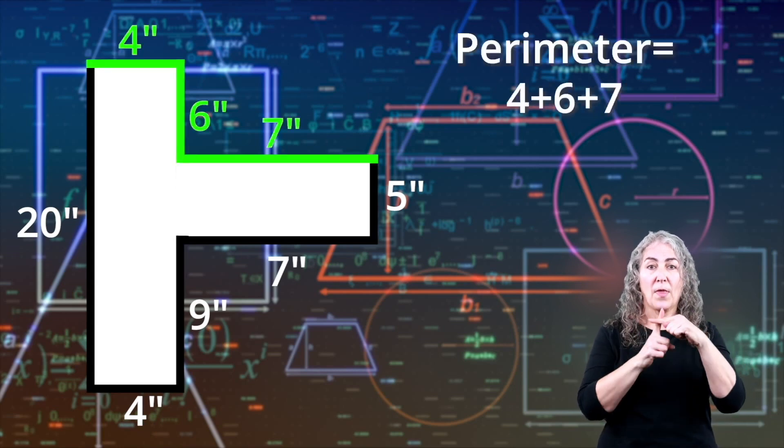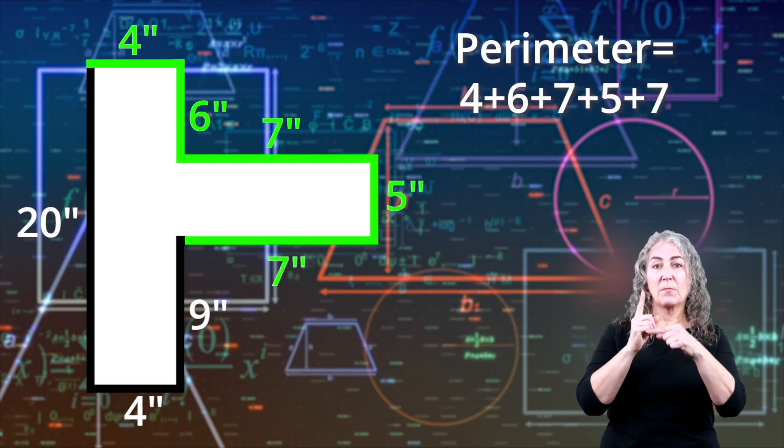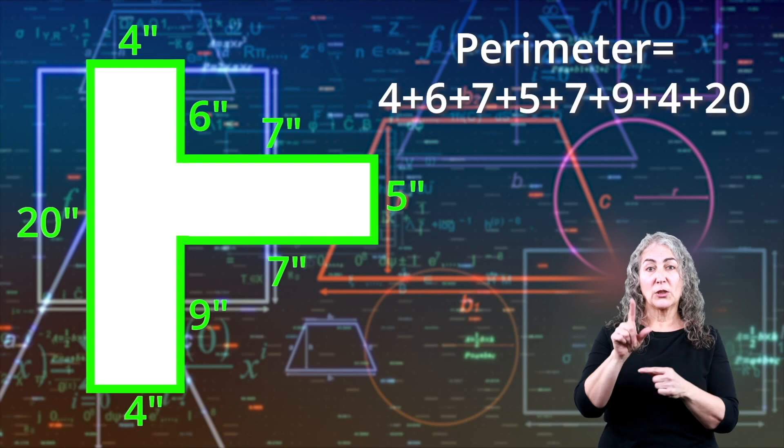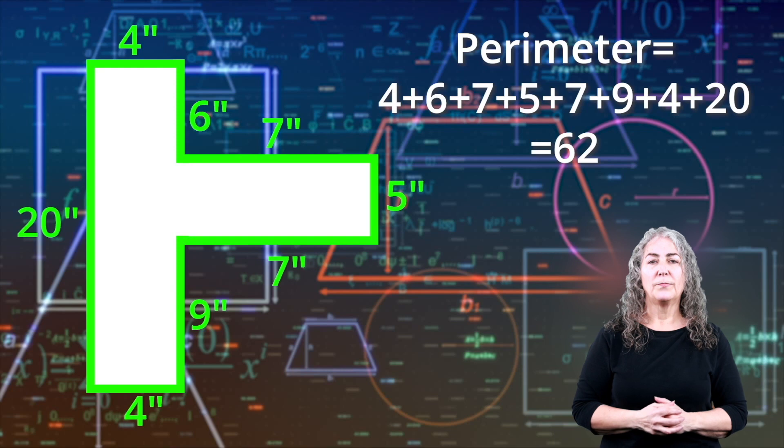4 plus 6 plus 7 plus 5 plus 7 plus 9 plus 4 plus 20 equals 62. So, our perimeter is 62 inches.